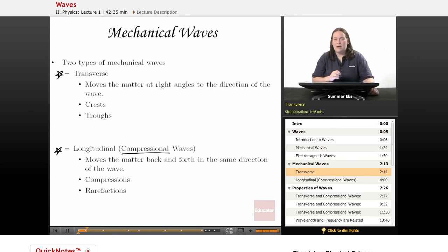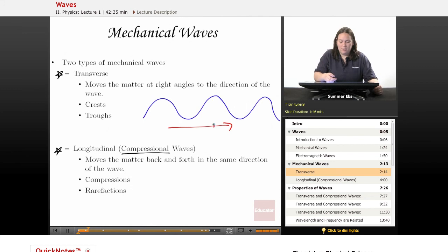Transverse waves move the matter at right angles to the direction of the wave. It's a complicated definition, so I'll draw it out for you. The wave moves up and down, like ocean waves. If the wave is moving to the right, it flows up and down - those are the right angles. From math class, a perpendicular line is at a right angle. These waves move perpendicular to the direction of the wave.